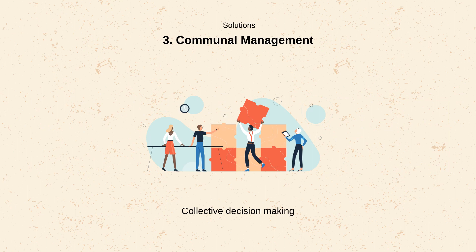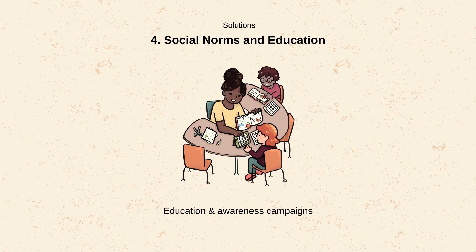Communal management: communities establishing their own rules, monitoring systems, and enforcement mechanisms to manage the resource for the benefit of all. Social norms and education: educating users about the long-term consequences of over-exploitation and the benefits of conservation.